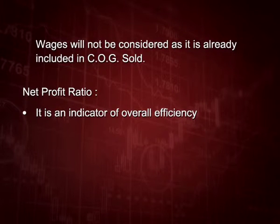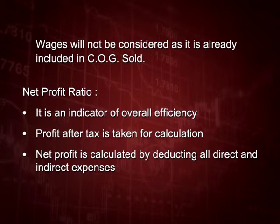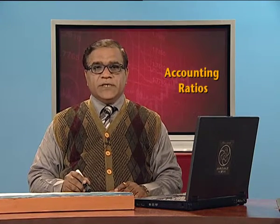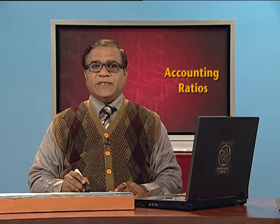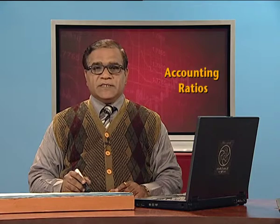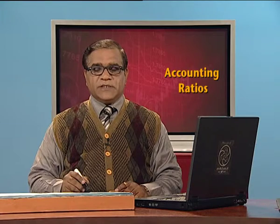The next ratio is net profit ratio, which is an indicator of the overall efficiency of the enterprise. Net profit is calculated by deducting all direct and indirect expenses. This ratio is calculated by dividing net profit after tax by net sales, multiplied by 100. For example, if net profit after tax is 5 lakh and sales are 20 lakh, the net profit ratio is 25 percent.